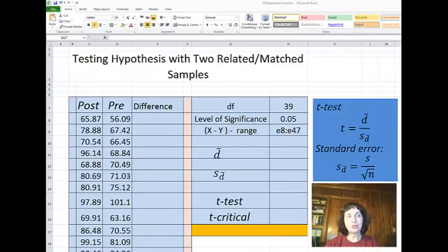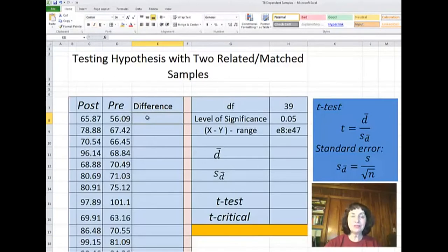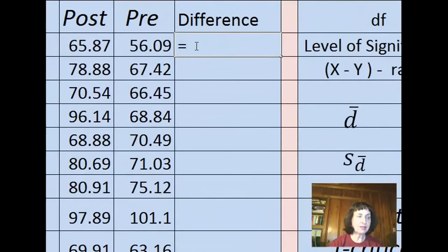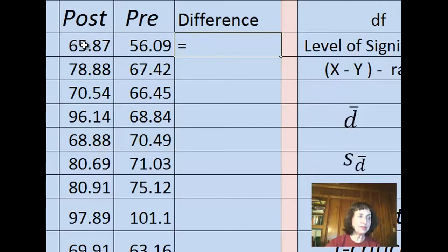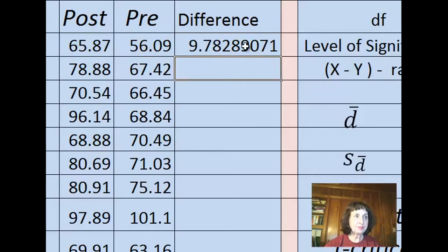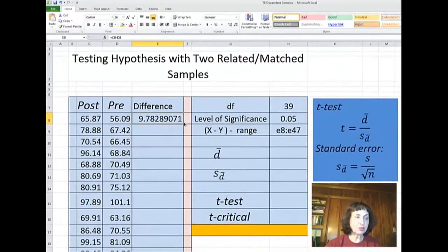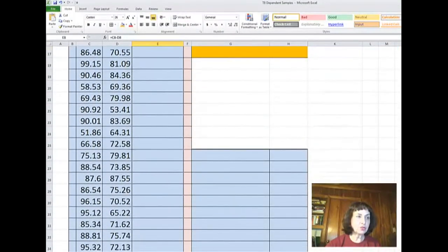To test the hypothesis with two related or matched samples, I always would like to have first the difference between the values of the post-test and pre-test, or between the matched individuals. In this case, I have the grades of my students before teaching some class and after teaching the class. So let's find for each individual the difference between post-test and pre-test. I will copy this formula for 40 randomly selected students.